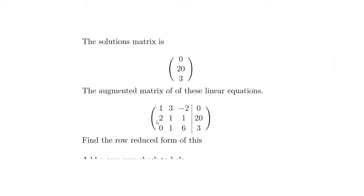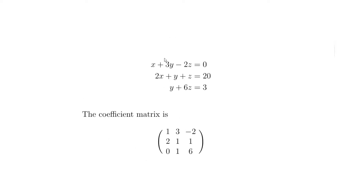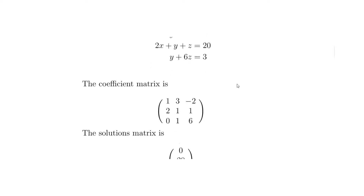Row reduction is a set of simple calculations performed on each row to eliminate variables into zeros. As we do that, we change the value of the solution column, which gives us our answers for X, Y, and Z. For example, if the 3 and -2 in row 1 were already zero, we could straight away say X equals zero.